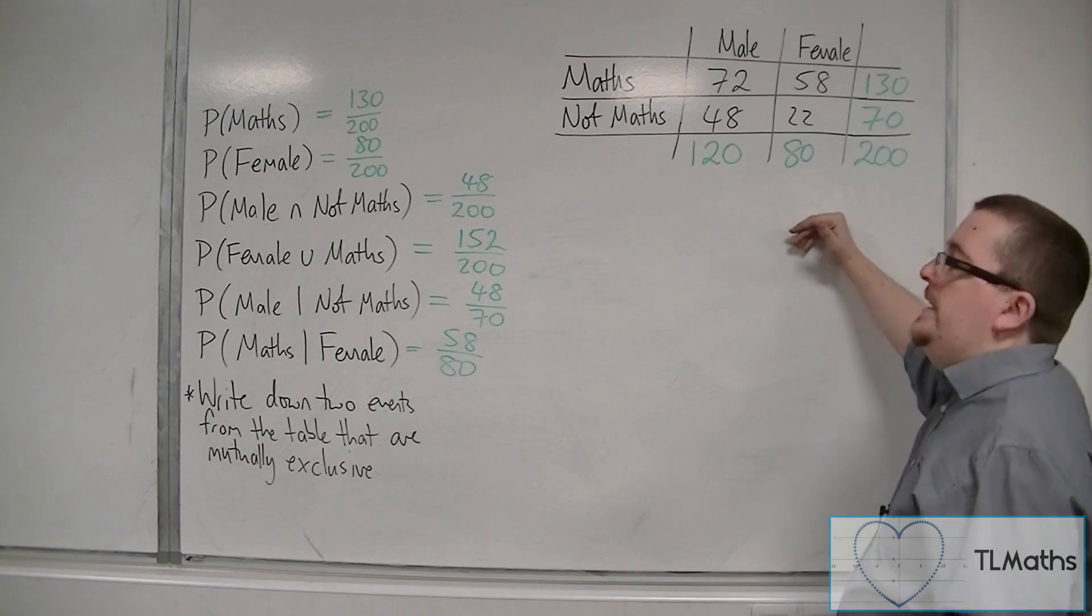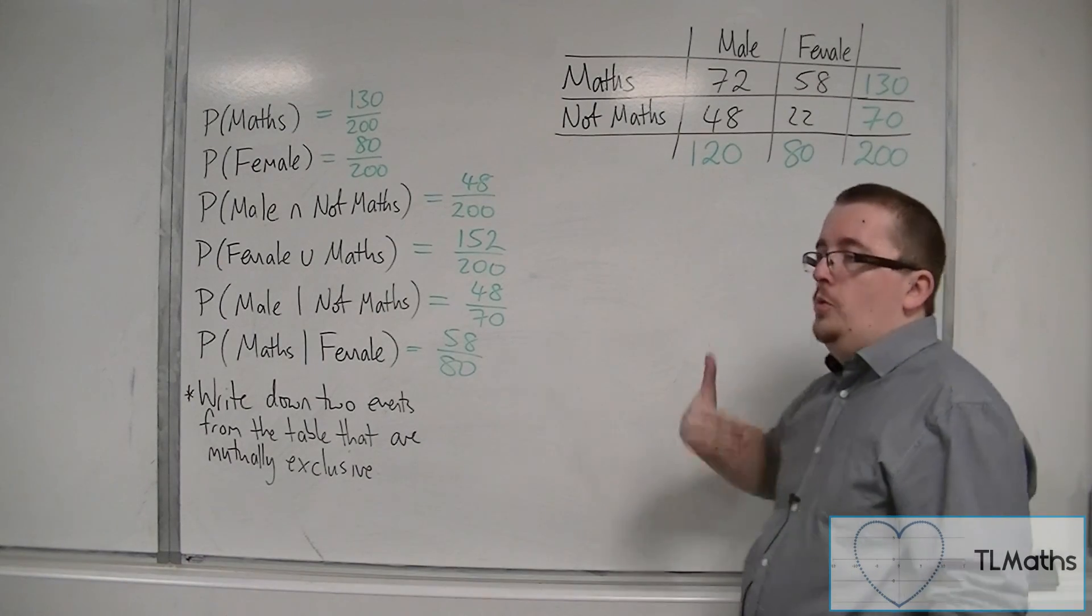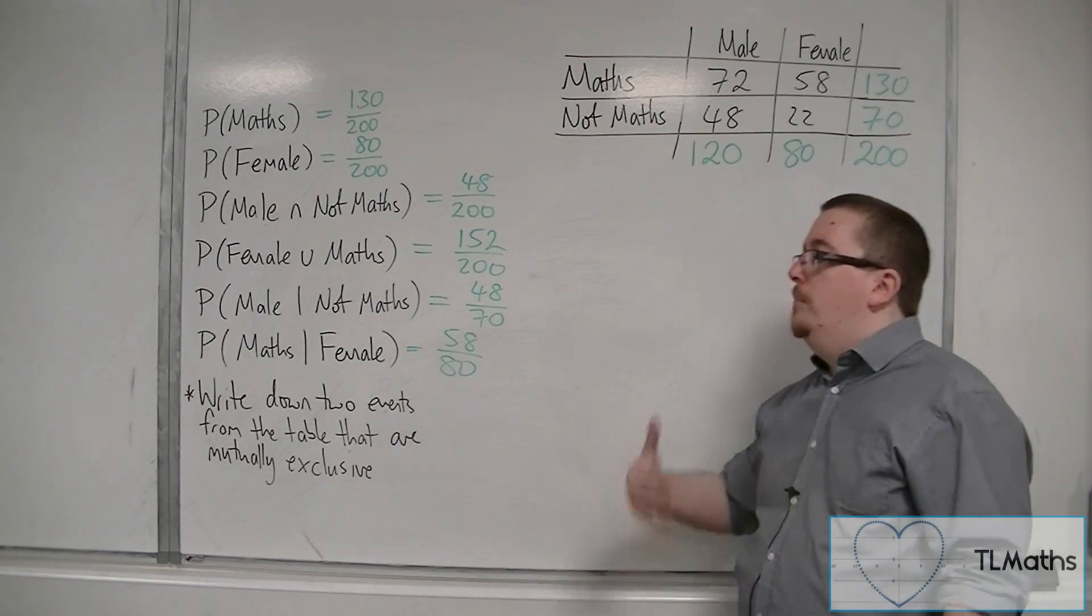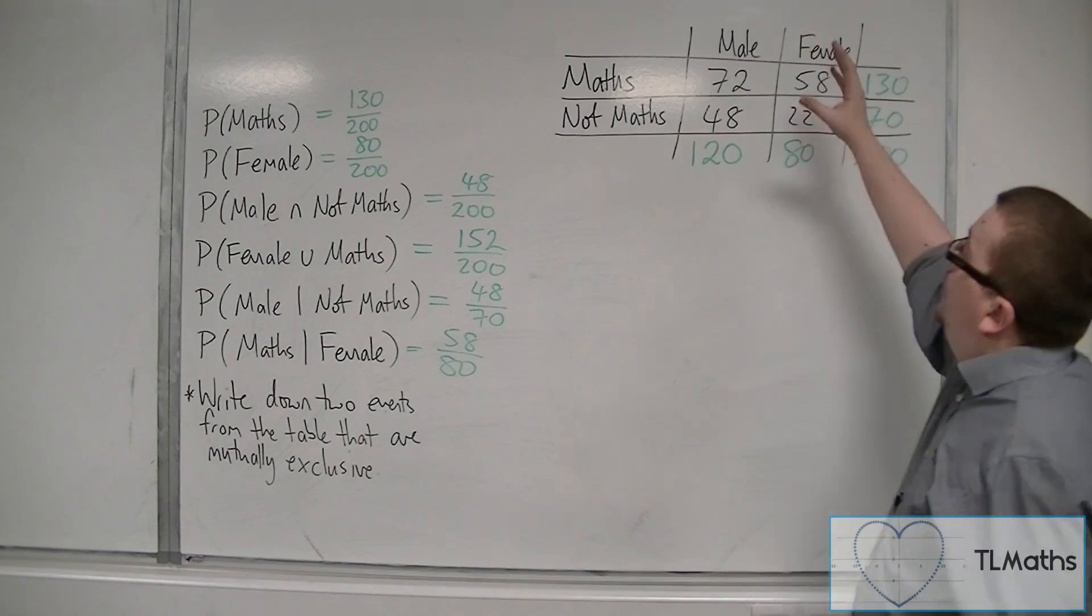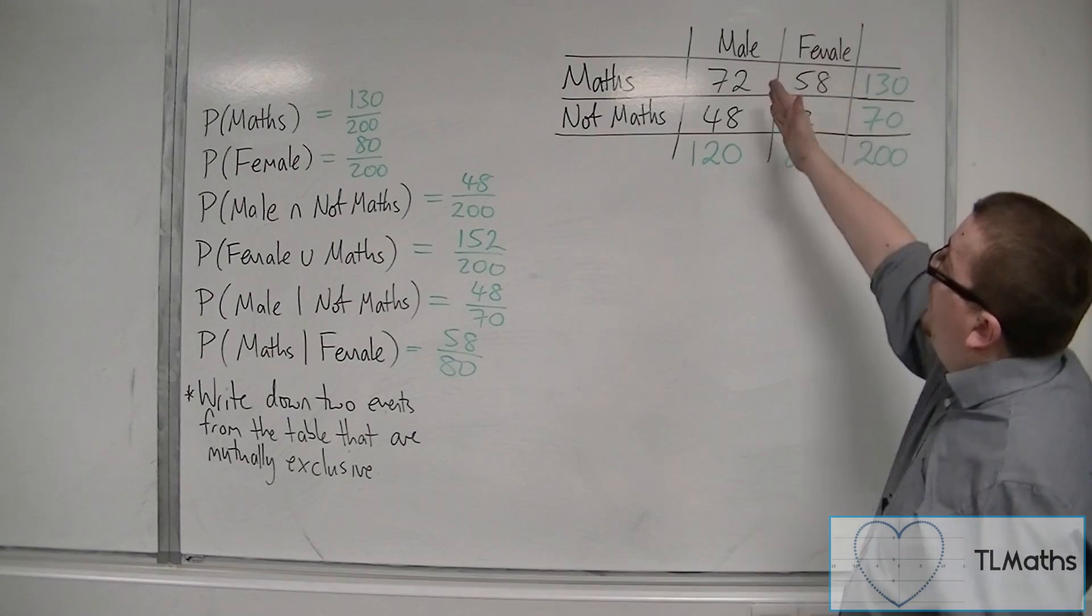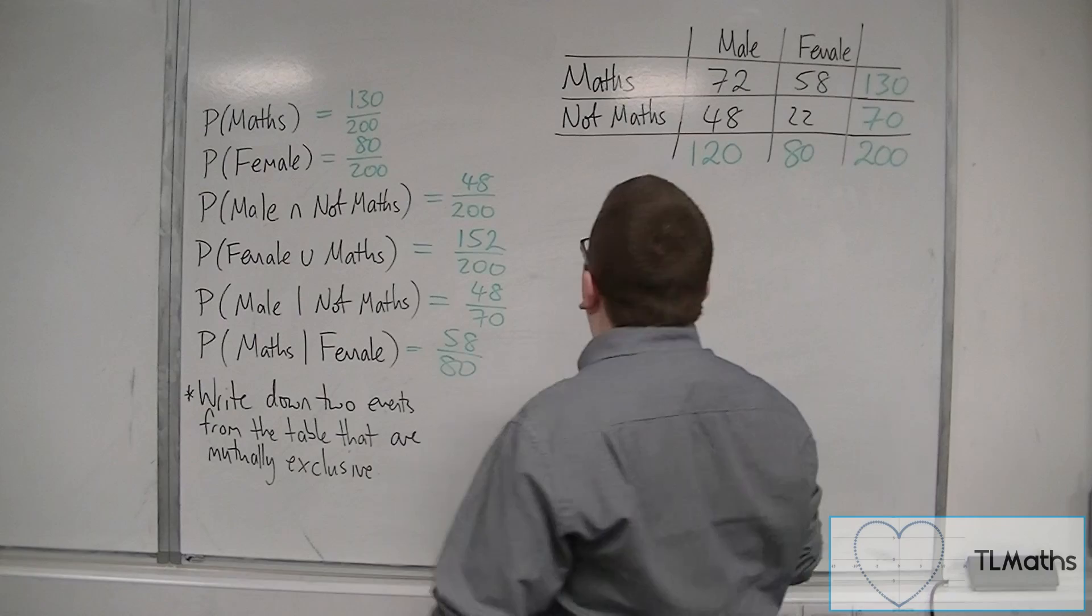And that is happening from our table in the fact that we have specifically 120 males and 80 females. Now, in general, we cannot say that these two are mutually exclusive. But from the table that we have, it would be true that male and female are two events that would be mutually exclusive in this case.